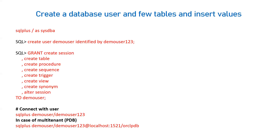First you have to create a user. I have posted a video on installing the database on Windows for demo purposes — you can download it from the Oracle website. After installation, you connect with the database using SQL Plus forward slash as SYSDBA, then create a user with: CREATE USER username IDENTIFIED BY password. You can then grant certain privileges to your user, like the ability to create connections in SQL Plus, and create tables, procedures, sequences, and triggers.